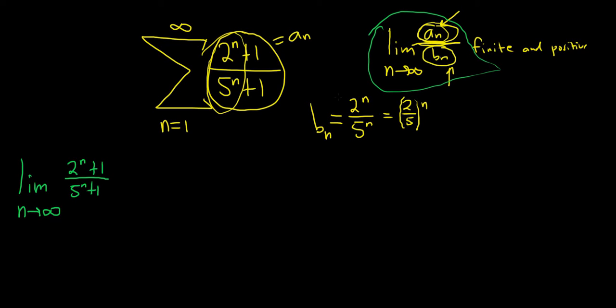And we're dividing it by b_n. So when you divide by b_n, you multiply by the reciprocal. So times 5^n over 2^n.